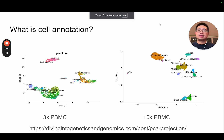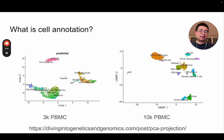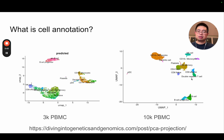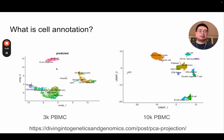So first of all, what is cell annotation? Usually in this case you have a reference dataset — a 10k PBMC dataset — and those cells were annotated by some experts. So you know those are NK cells, monocytes, B cells, CD4 cells, and CD8 T cells. And now you have a query dataset and you want to predict the cell label of your query data.